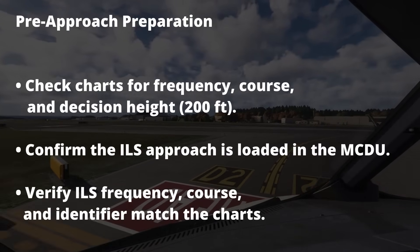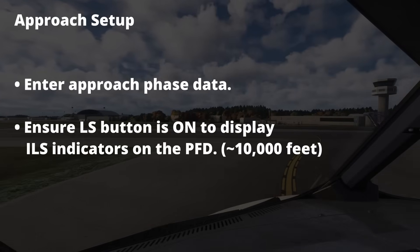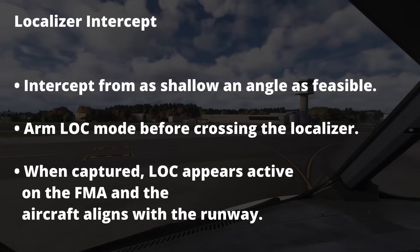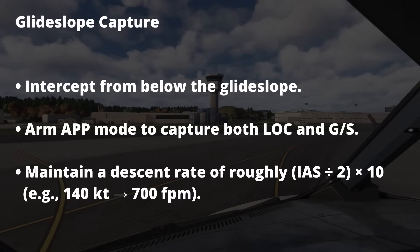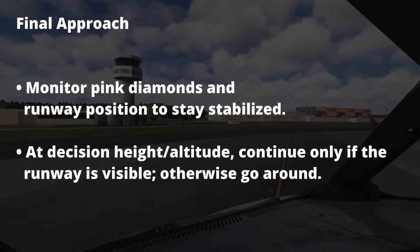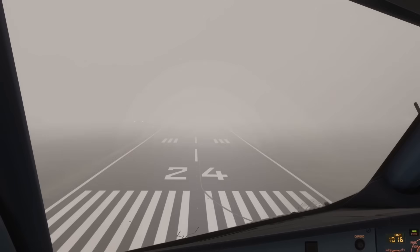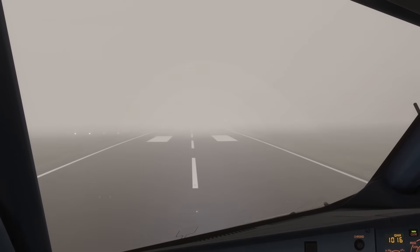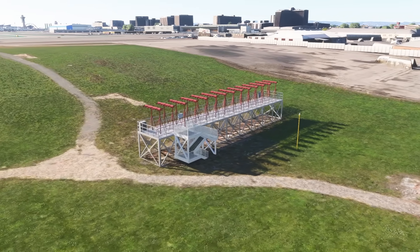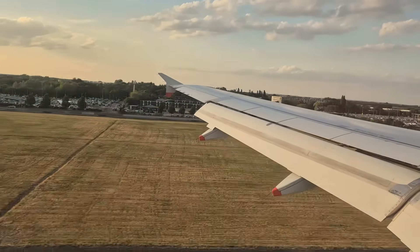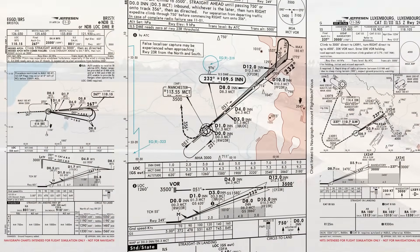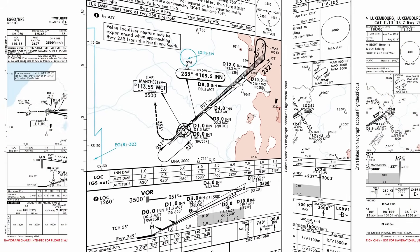All of these steps will be on screen for the next few seconds, so feel free to pause and read along as you fly the approach. So that's the ILS — your best friend for IFR flying. It combines the localizer for lateral guidance and the glide slope for vertical guidance, and together they guide you precisely and safely to the runway. Know your frequencies, courses, and decision heights, and you'll be ready for any ILS approach with confidence. Please consider subscribing — this is Flight Deck Focus, that was the ILS, and I'll see you in the next one.